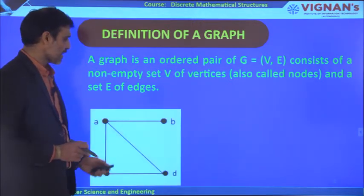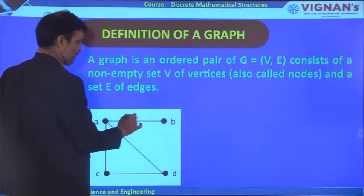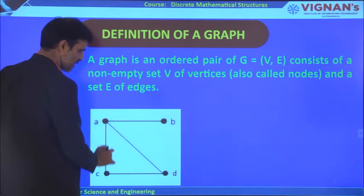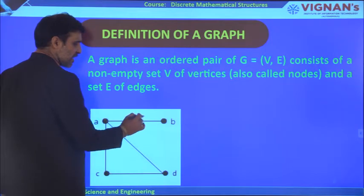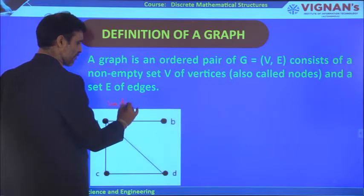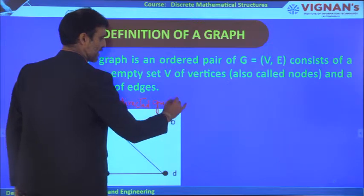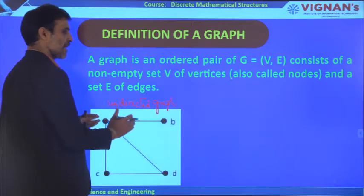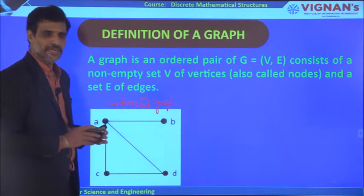In a graph where you can move from A to B or B to A, A to D or D to A — where no direction is mentioned — it is called an undirected graph. The directions have not been specified; only vertices and edges are shown. This is called an undirected graph.